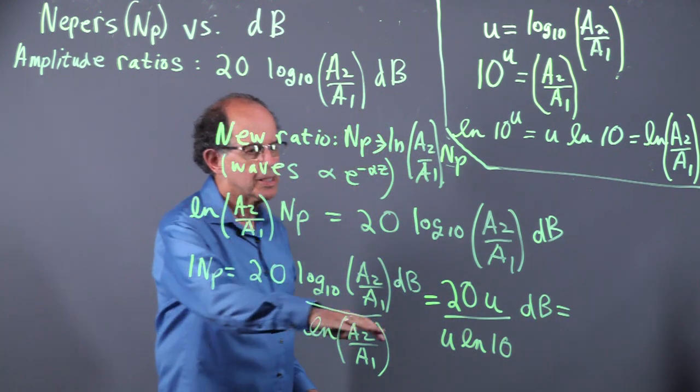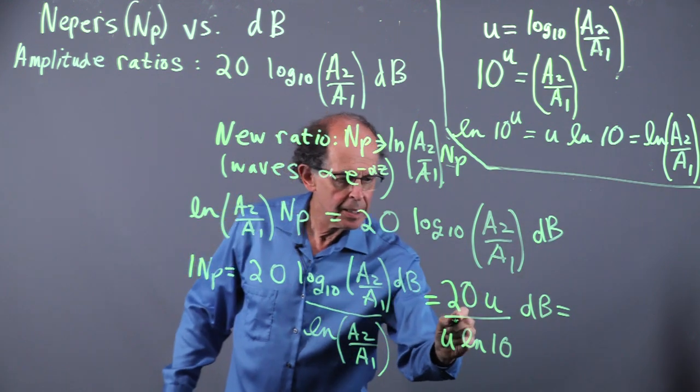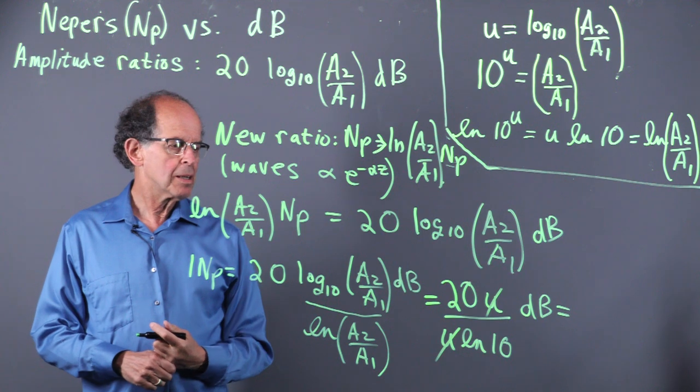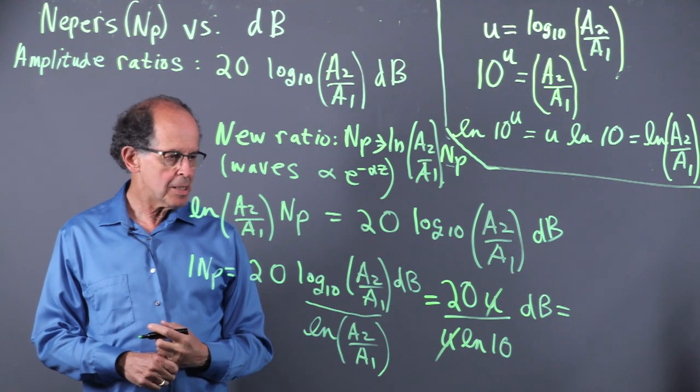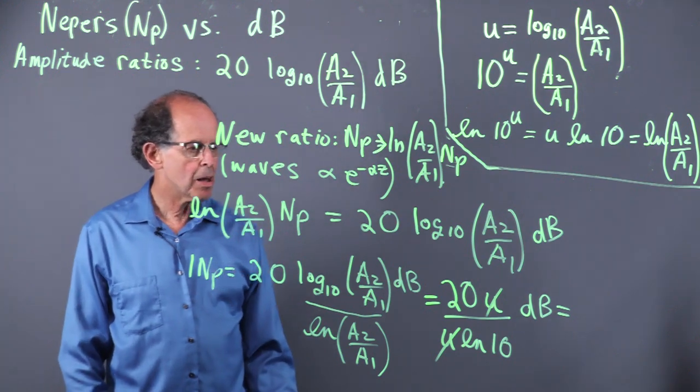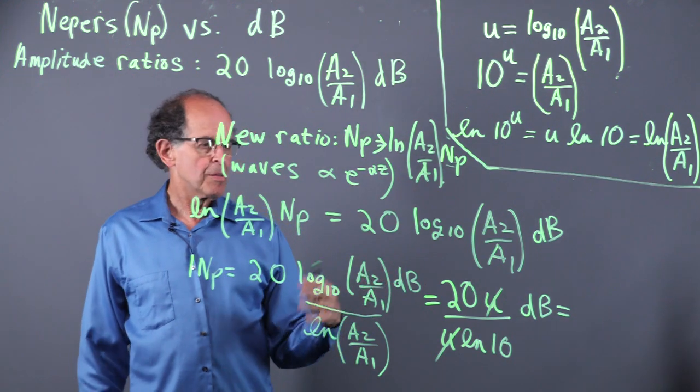So one Dnepr is this many dB. The U's cancel. If you look up log of 10 to the base E, natural log, or Ln as we write it, log 10 is about 3-ish, or between 2 and 3.